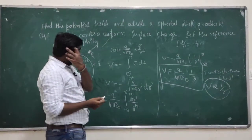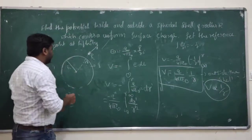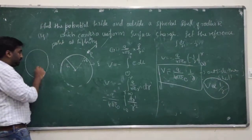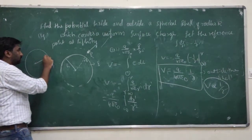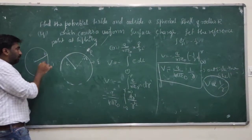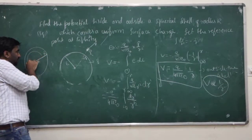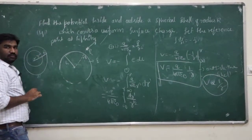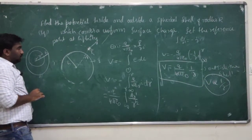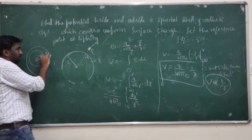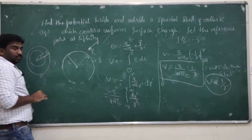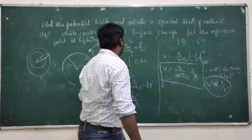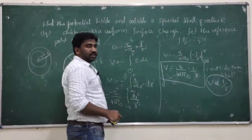Now I am going to calculate the potential inside the spherical shell at a distance r. To calculate the potential at this interior point, we have to split and divide this integral into two parts.